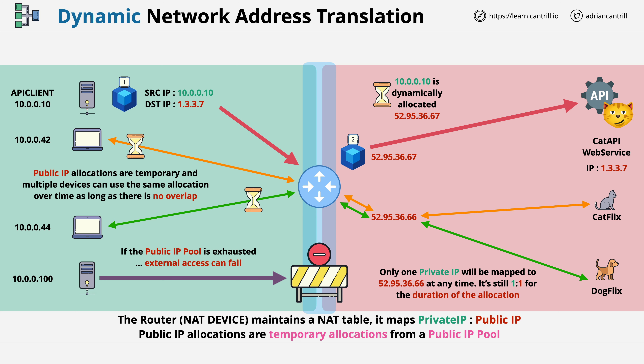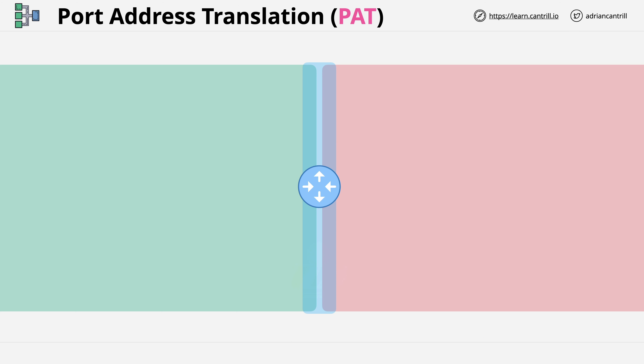The last type of NAT I want to talk about is the one you're probably familiar with: port address translation. This is the type of NAT you likely use on your home network. Port address translation is what allows a large number of private devices to share one public address.